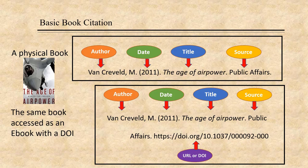A basic book citation is easy. Your building blocks are in the same order as those for the article citation: author, date, title, source. Remember to put the book title in italics. And if the book is an e-book, add the URL or DOI after the publisher's name. The source information for a book is the publisher's name, rather than the journal name.